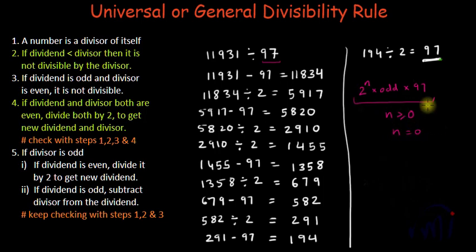When n equals 0, the result is odd. When n is greater than or equal to 1, the result is even. The 2 to the power n part is handled by dividing by 2, and the odd number part is handled by subtracting 97.